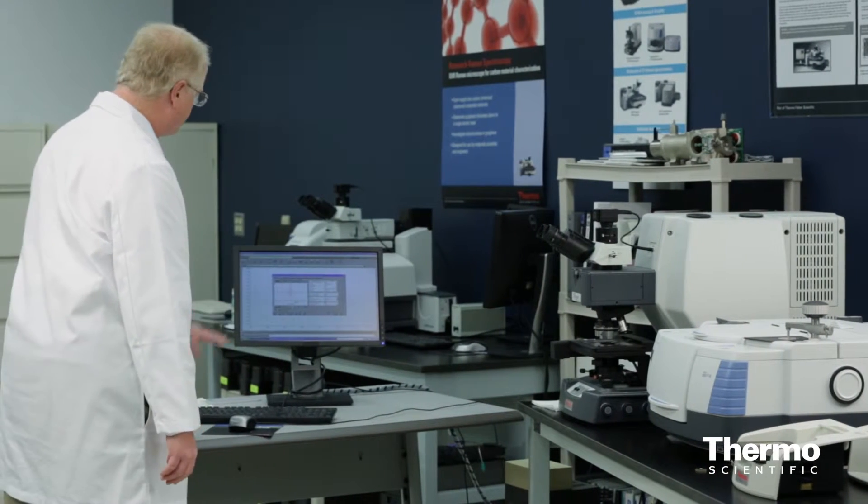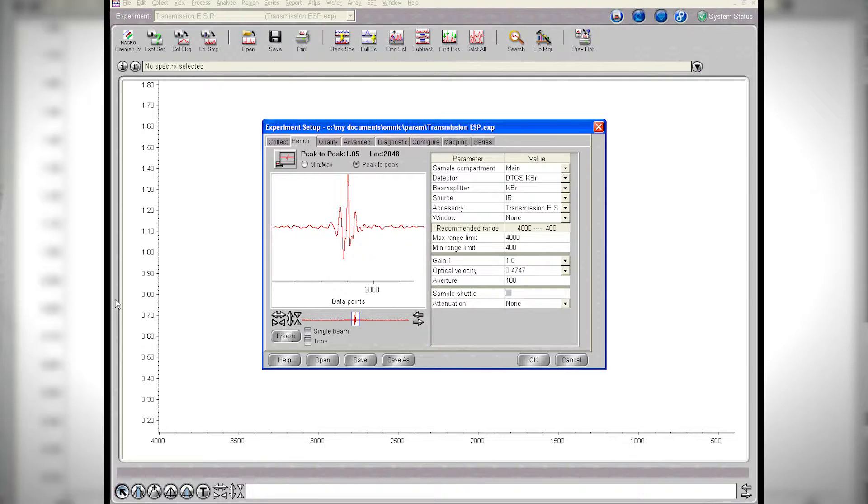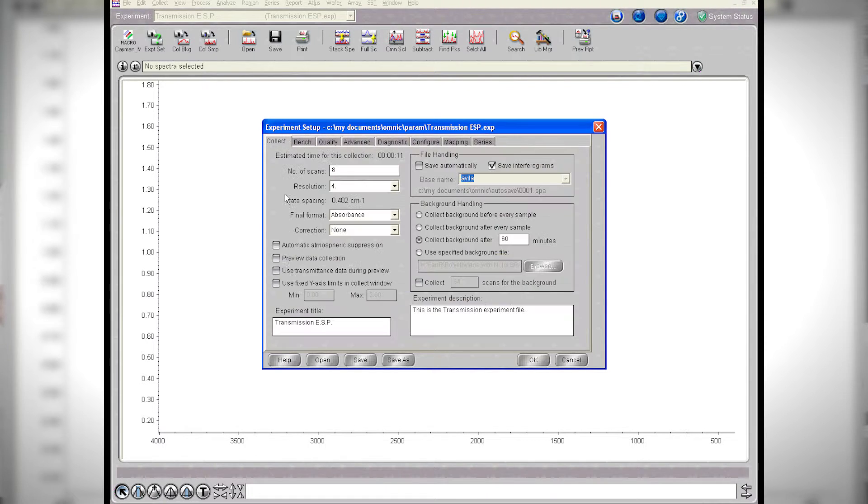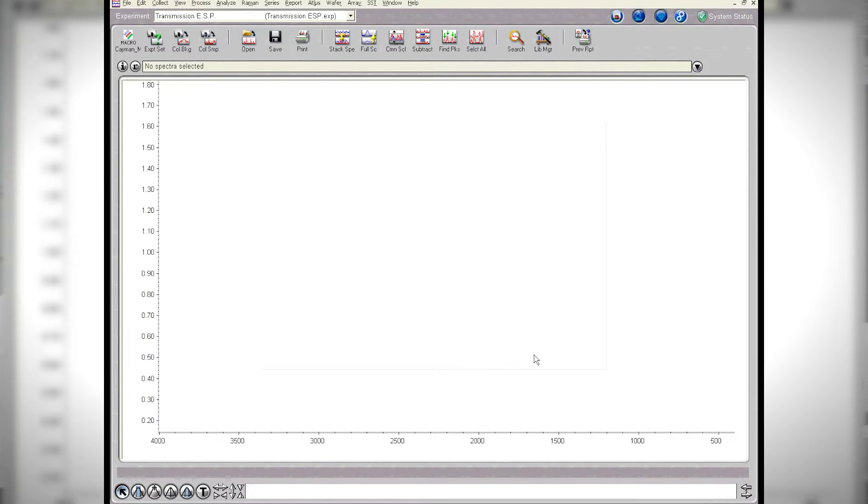Now you can see the software is set up here for a moderate resolution, a four wavenumber resolution experiment using the DTGS detector, the deuterated triglycine sulfate thermal detector. And running at a moderate speed, I'm going to collect eight scans at four wavenumber. That's all I need to know, so let's go ahead and run.